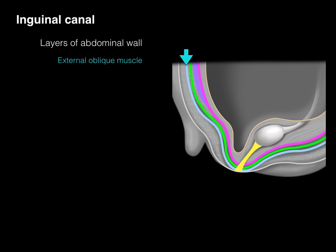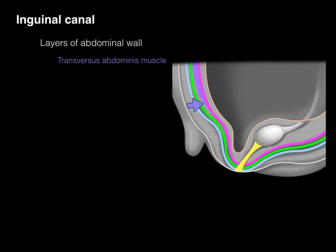The next layer is the external oblique muscle and associated aponeurosis, then the internal oblique muscle with associated aponeurosis, and then the transversus abdominis muscle. As it extends down to the perineum area, the muscle ends and the aponeurosis fuses with the transversalis fascia, shown in pink.